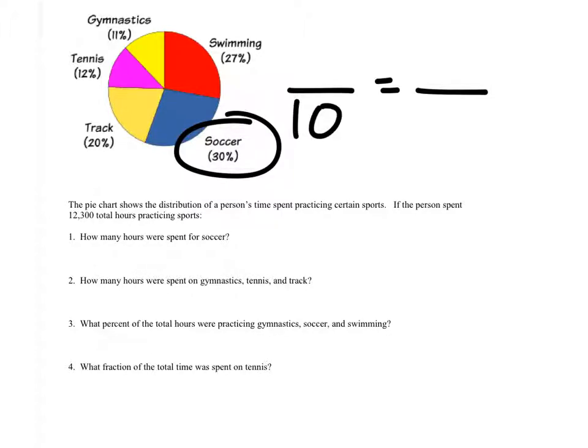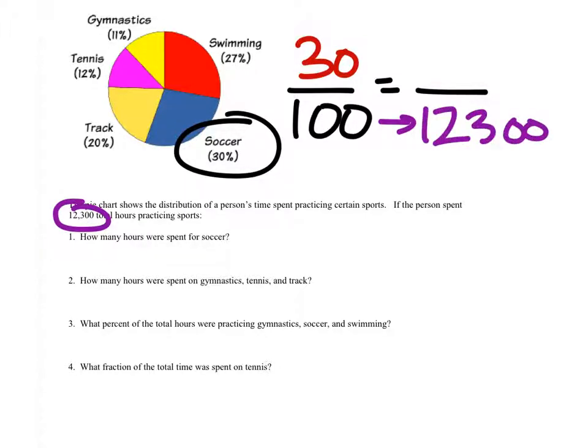So it's out of 100%. We have our percent above that. And we already know the total amount of hours, I guess. That's a different example. The number of hours is 12,300. That's why we want to know how many hours 30% of that would be. So that's how this sets up.